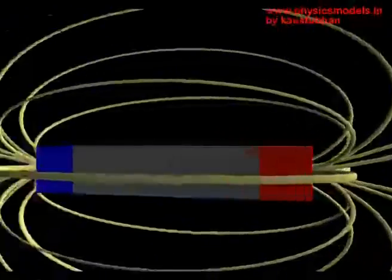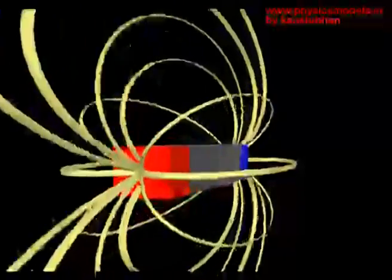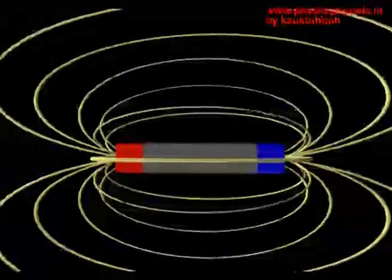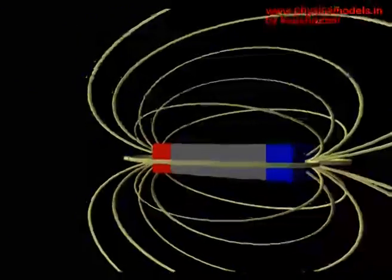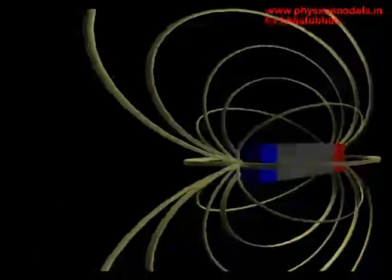If you walk around a bar magnet, we will notice that the lines of force that are actually invisible are distributed all around the magnet. They are not just in the plane of the paper or in the plane of the screen. They are 360 degrees distributed around the center line that goes through the length of the bar magnet.